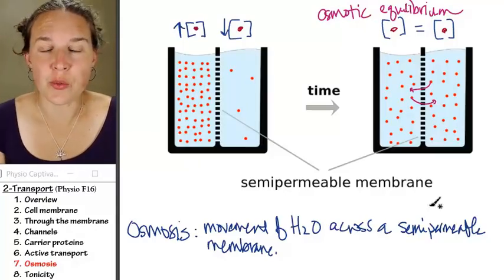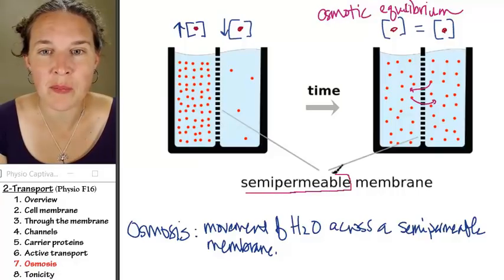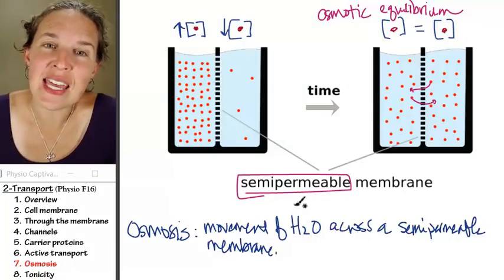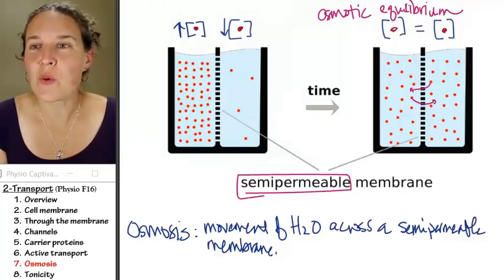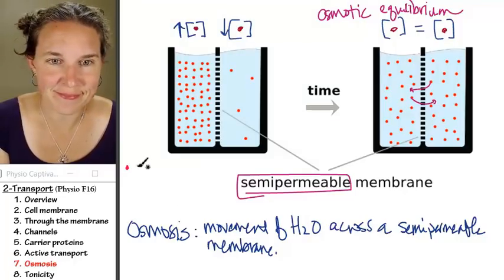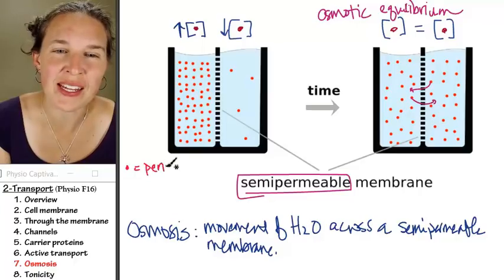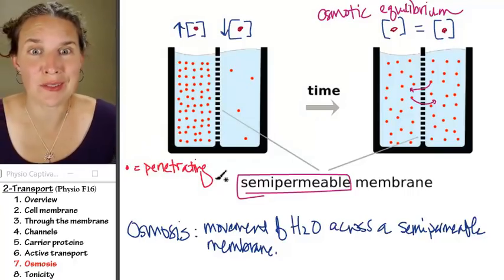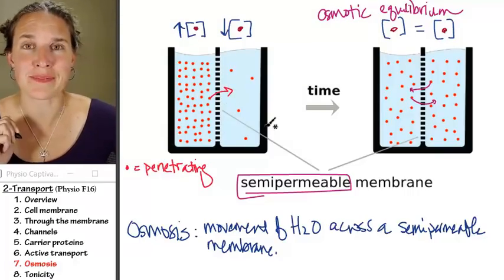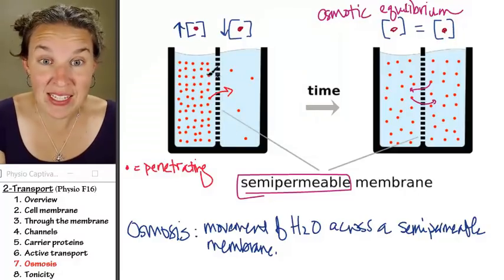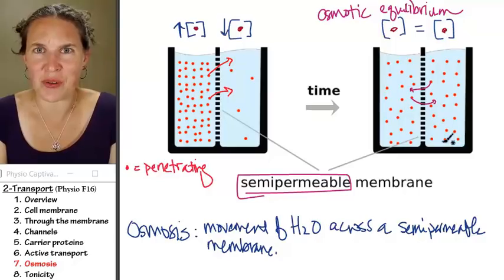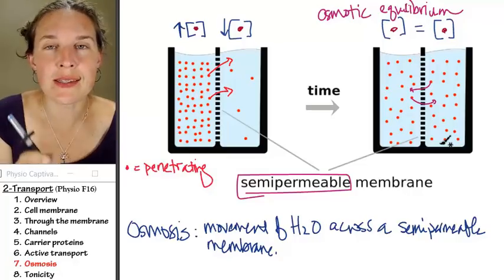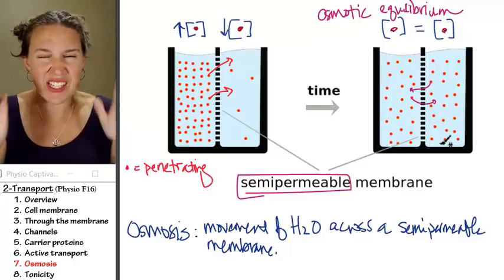Here's the scoop. We're calling this a semipermeable membrane. Some things can get through and other things can't. In this picture, the red particles are considered penetrating particles. A penetrating particle can go through the cell membrane. Osmosis does not happen if particles in the situation are penetrating.